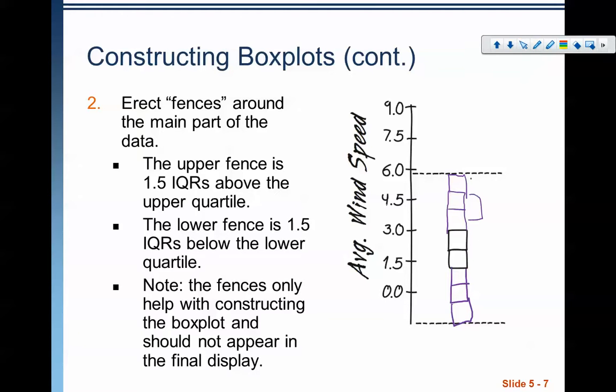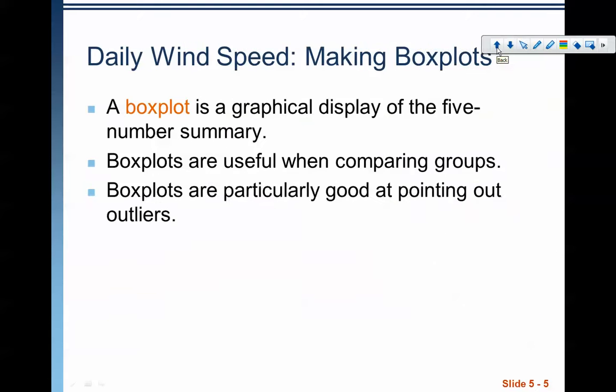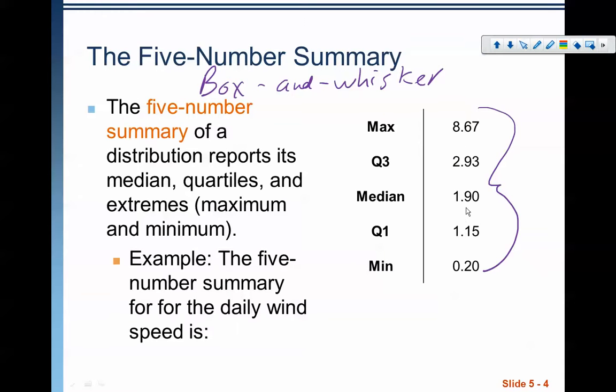If you want to have exact measurements here, what you need to do is take those values from the five number summary and do the calculations. So for example, if we want to find what the interquartile range is, we take 2.93 minus 1.15, which is 1.78. So that's my interquartile range.